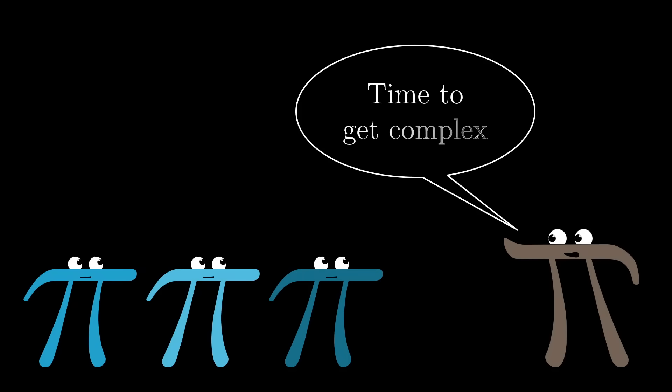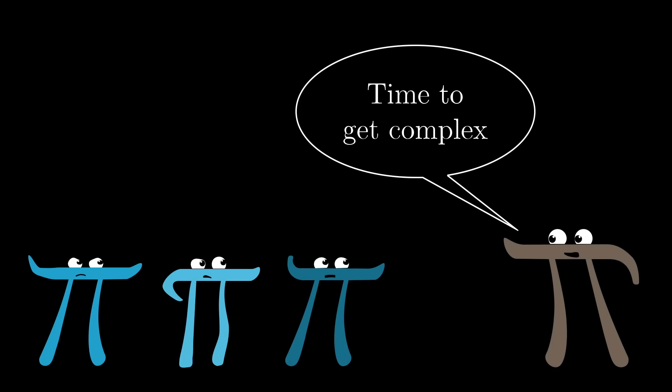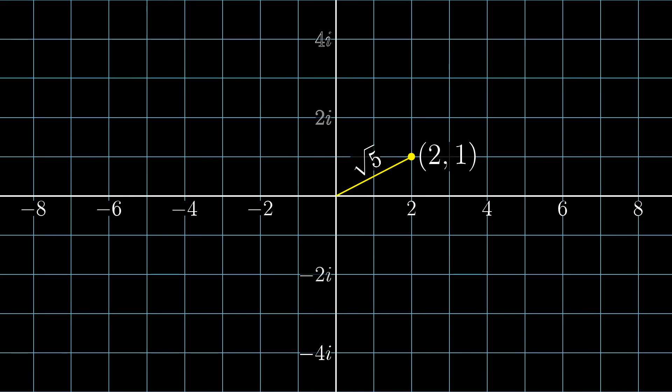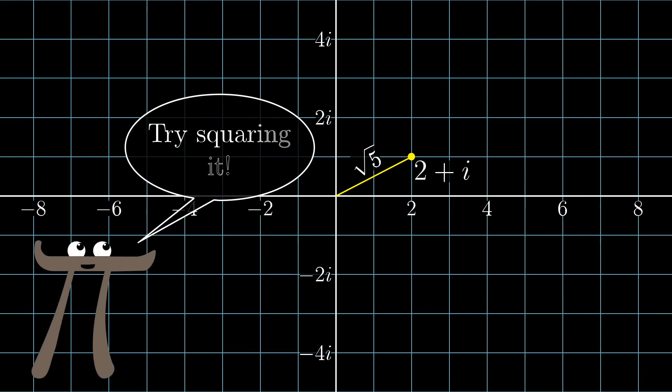Now taking what might seem like a strange step, but one which will justify itself in just a moment, think of this as the complex plane, so that every one of these points, like 2-1 here, is actually an individual complex number, in this case 2 plus i. What this gives is a surprisingly simple way to modify it to get a new point whose distance away from the origin is guaranteed to be a whole number. Just square it.